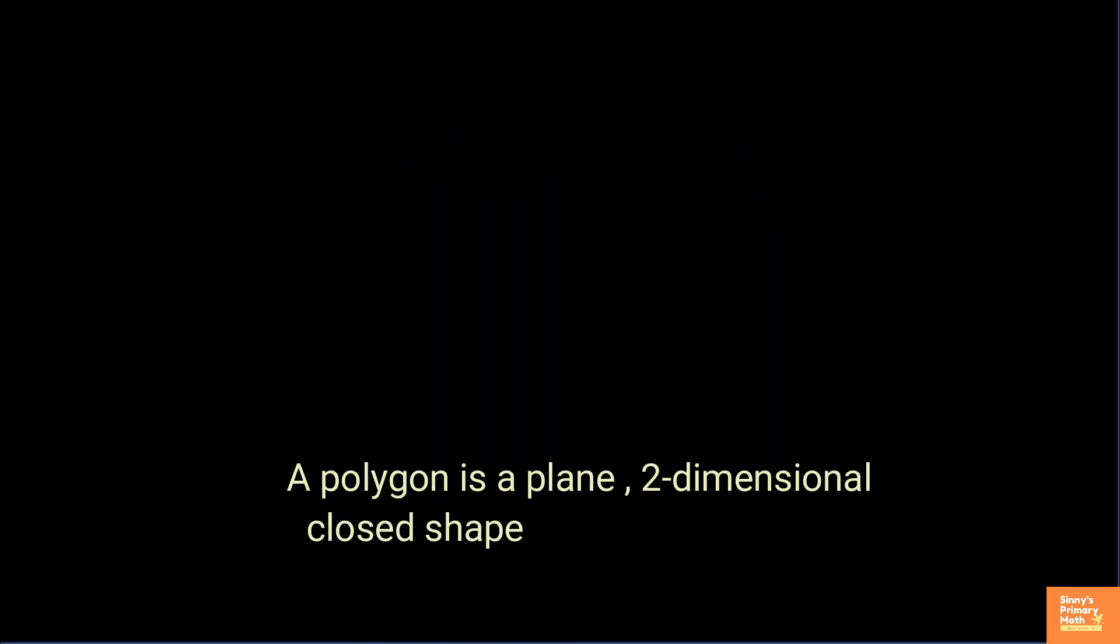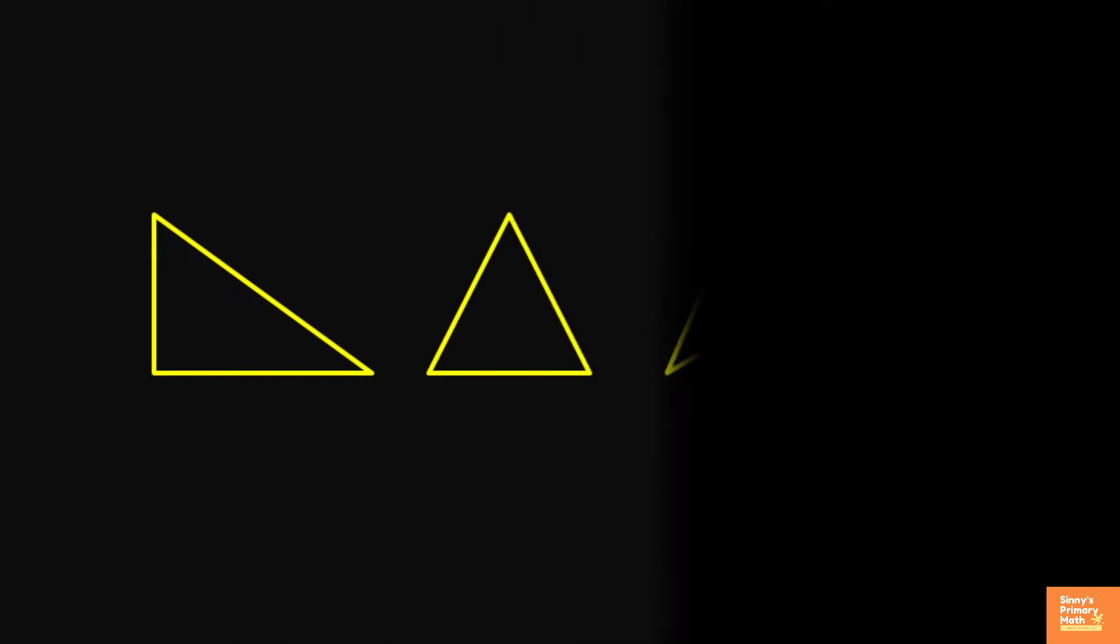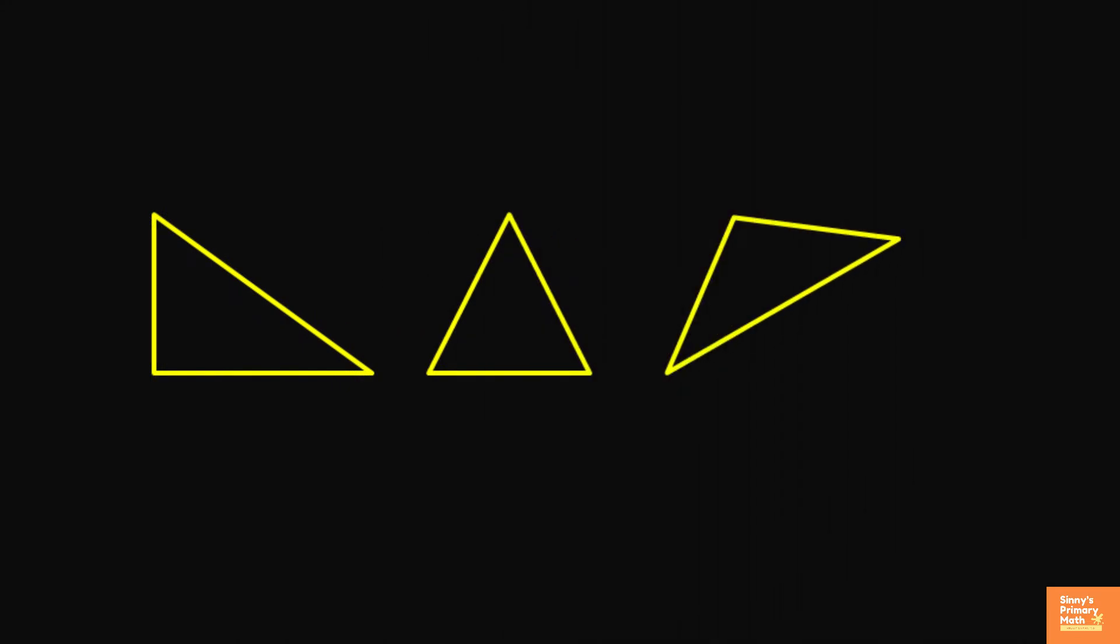A polygon is a plane, two-dimensional closed shape with straight sides. Polygons are named after the number of sides they have.